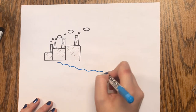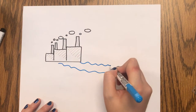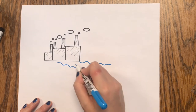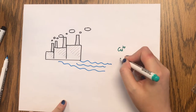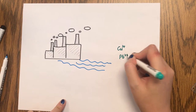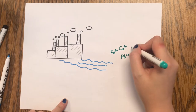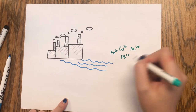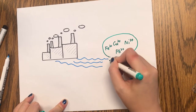Nowadays, industrial wastewater containing lots of detrimental metal ions does harm to human society. In our capstone project, we designed a polymer membrane to solve this problem.